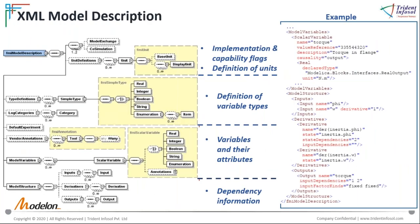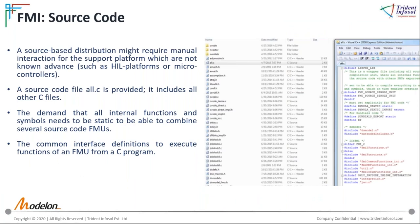The model description file contains details of model variables, parameters, and other static information. It defines unit definitions, variable data types, data attributes, causality details, and dependency information of variables in this XML file. The XML file contains definitions of variables that are exposed to the environment in which the FMU shall be used, as well as other model information. If the C code source code includes FMI, then all necessary C files will be present inside the source folder. This is intended to support platforms not known in advance, such as hardware-in-the-loop or real-time simulation platforms, or microcontroller platforms where source-based distribution might be required.